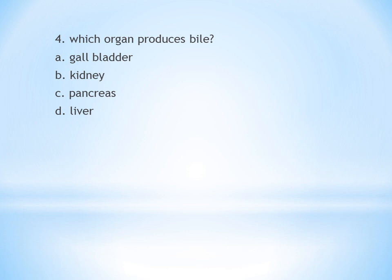Question: Which organ produces bile? A. Gallbladder. B. Kidney. C. Pancreas. D. Liver. Bile is produced by the liver. So the answer is D, liver.